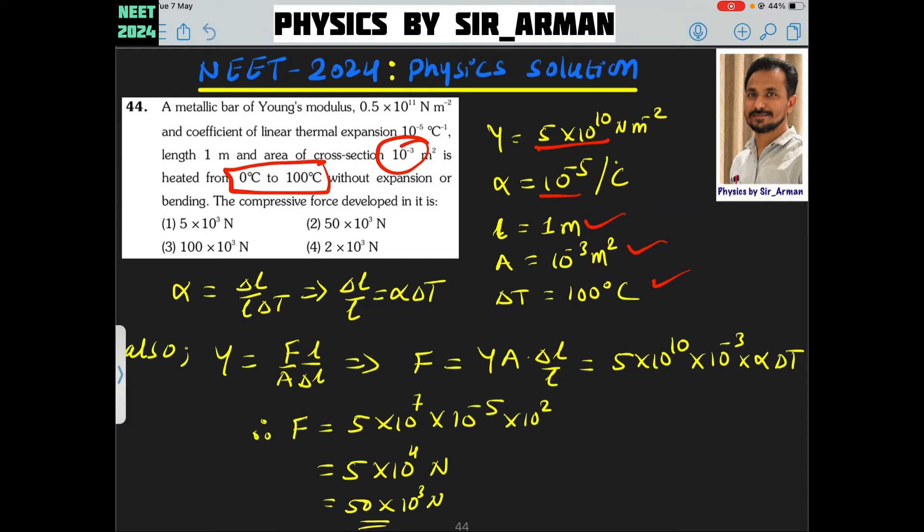We know that Y is equals to F by A L by delta L. This is the equation for the Young's modulus. Force is asked, so I can make F as a subject. It becomes Y A then delta L by L.